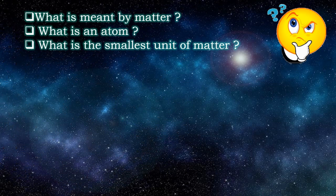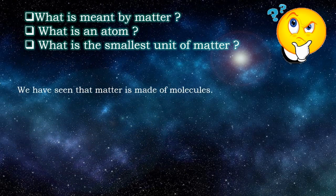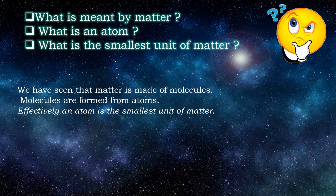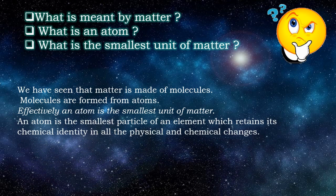Now we can answer the questions we started with. Matter is made up of molecules, and molecules are formed from atoms. Effectively, an atom is the smallest unit of matter — the smallest particle of an element which retains its chemical identity in all physical and chemical changes.